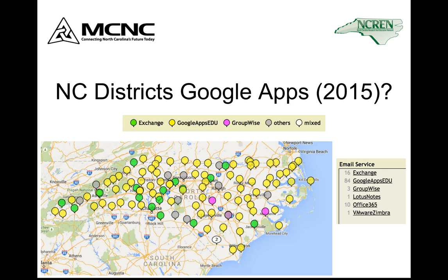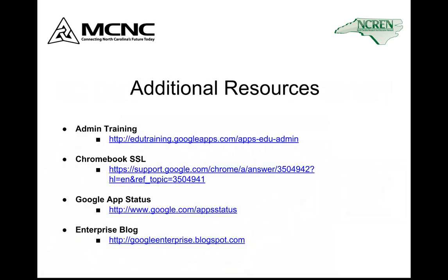A lot of those are in one-to-one situations, but they're also available in cart setups as well. The presentation will be available later with some additional resources. One is the admin training section of Google Apps. You've also got access to the Chromebook SSL — we'll talk about SSL in just a second. This will take you to information on installing SSL certificates if you're using a content filter that requires them. The Google Apps status page will let you know if things are down within the Google network. I also highly encourage you to take a look at the Enterprise blog, where you can subscribe and get information about all the latest items coming from Google Apps.